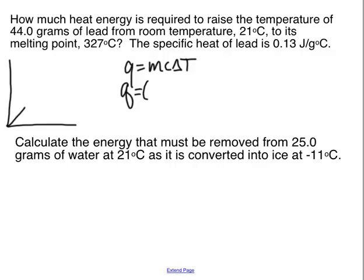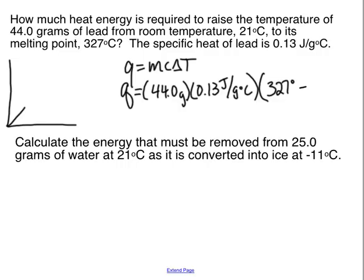Our mass of lead is 44. The specific heat of lead is 0.13 joules per gram degrees Celsius. Our delta T: T final is 327 and T initial is 21.0. We're going to get a positive number — we're putting in energy to make it melt, so that's Q positive. To two sig figs, the answer is 1,800 joules.